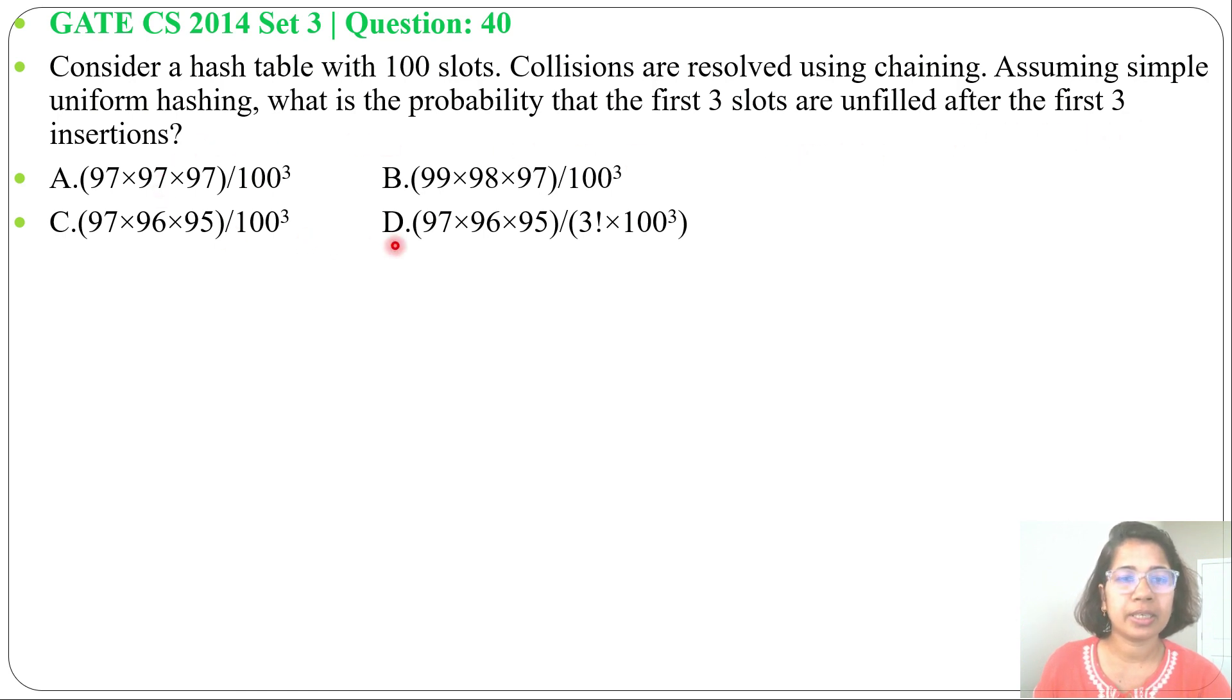Four options are given. Here it's written collisions are resolved using chaining. Chaining means in a single slot we can insert multiple keys and make a linked list.